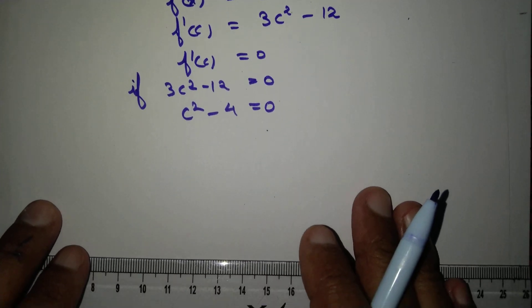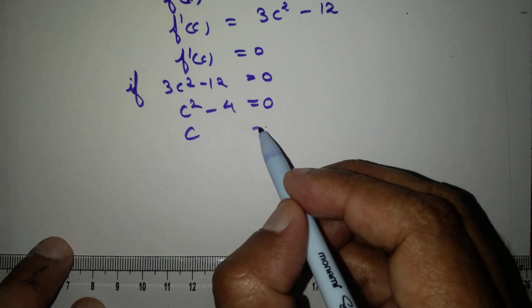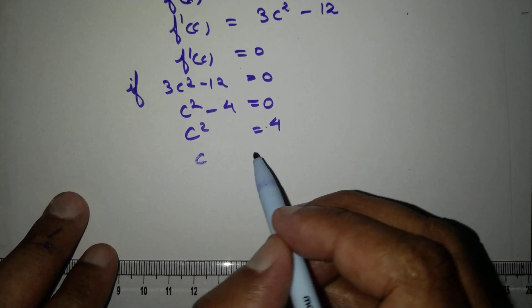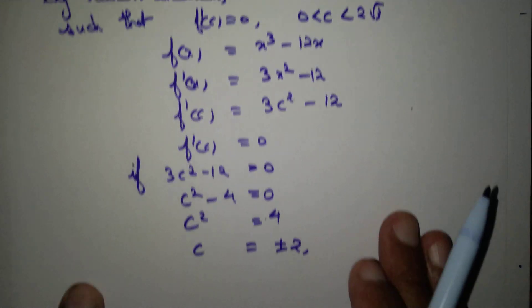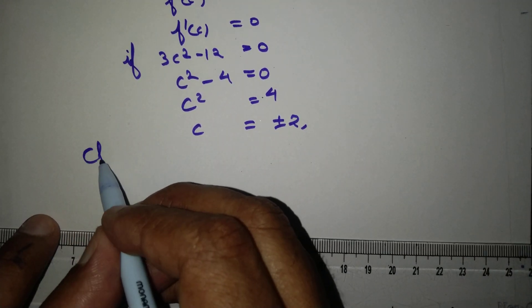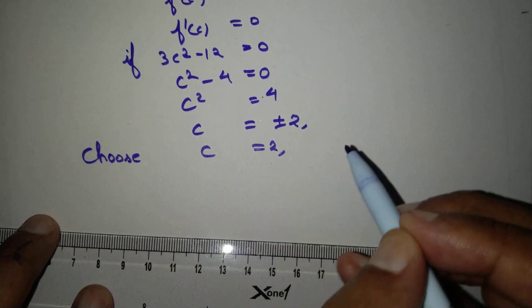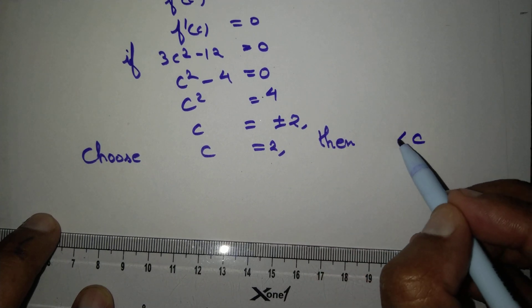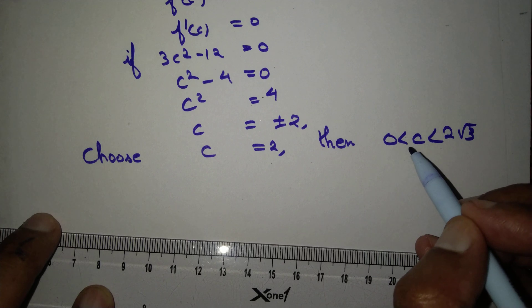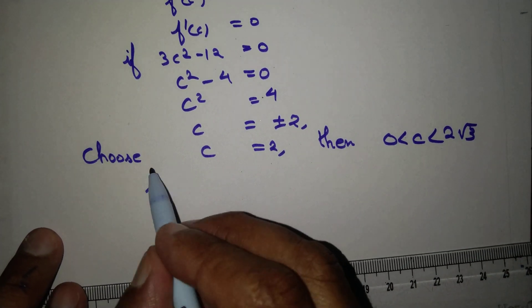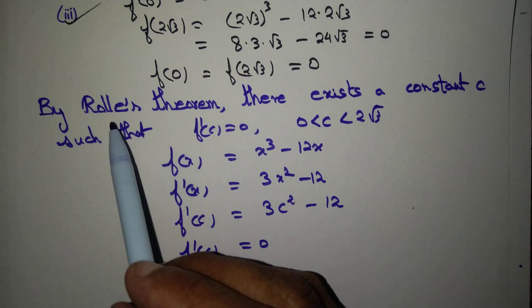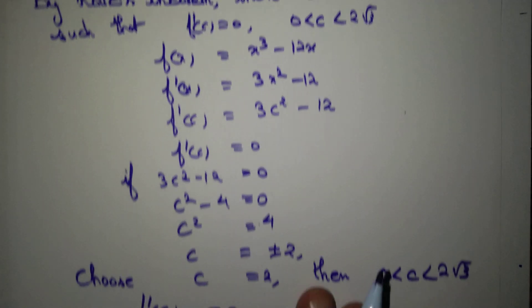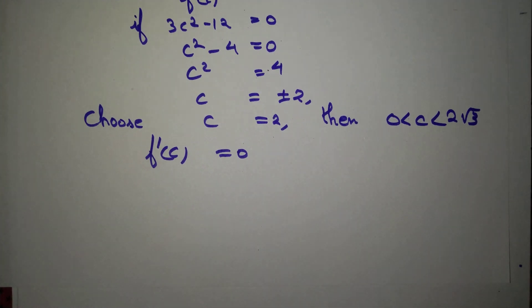Taking 3 as common, we get c² minus 4 = 0, so c² = 4 and therefore c = ±2. We need c to lie between 0 and 2√3, so we choose c = 2. Since 2 is greater than 0 and less than 2√3, and f'(2) = 0, we have found the constant c that Rolle's theorem guarantees to exist. That c is exactly equal to 2, so we have verified Rolle's theorem.